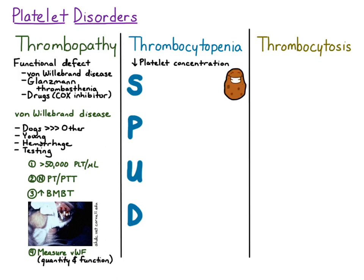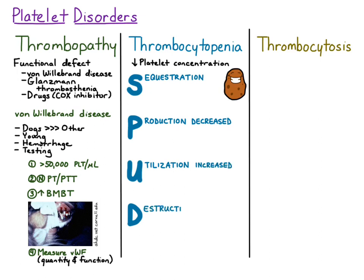S stands for sequestration of platelets. P stands for decreased production of platelets. U stands for increased utilization of platelets, and D stands for destruction of platelets — typically immune-mediated destruction.